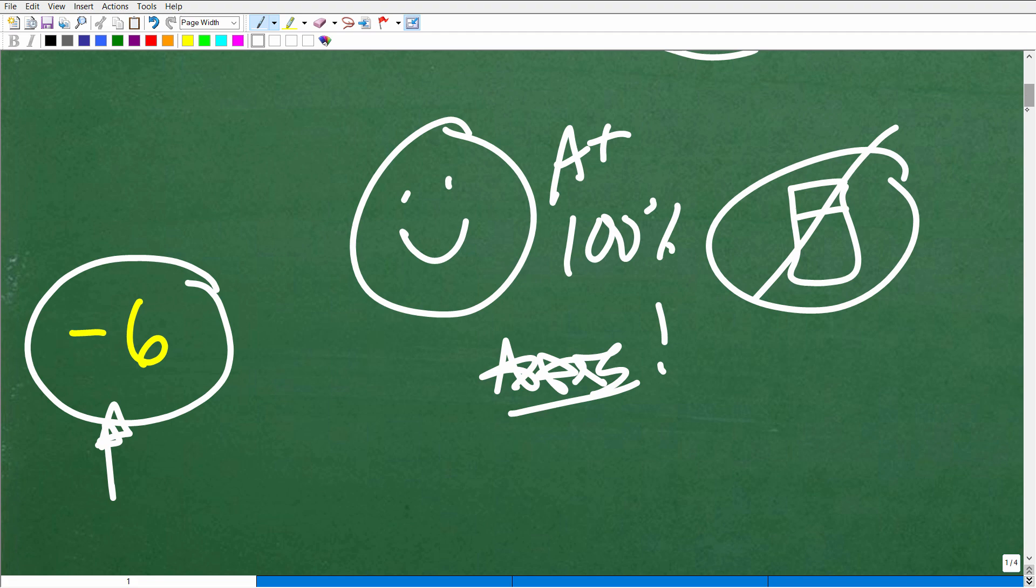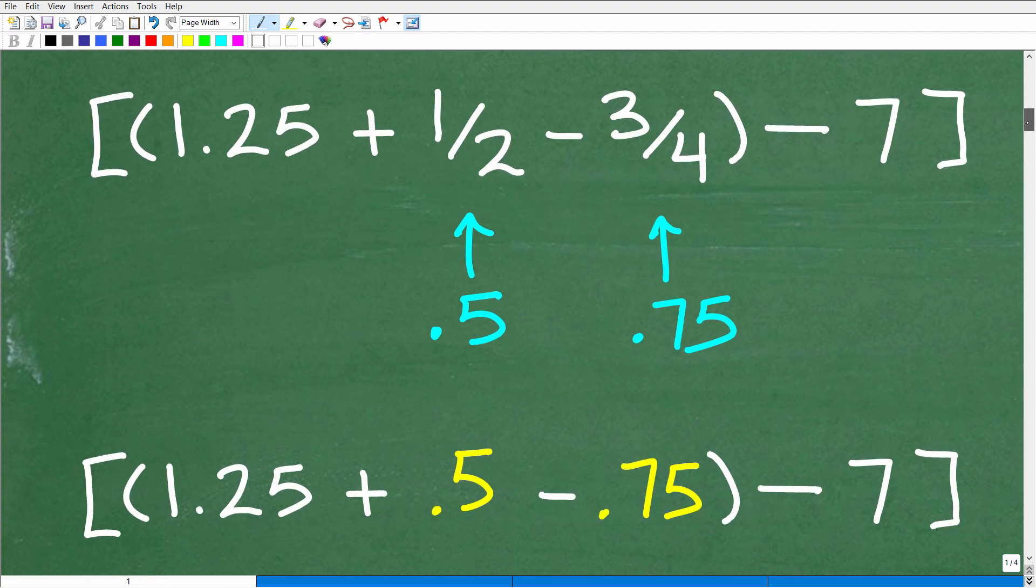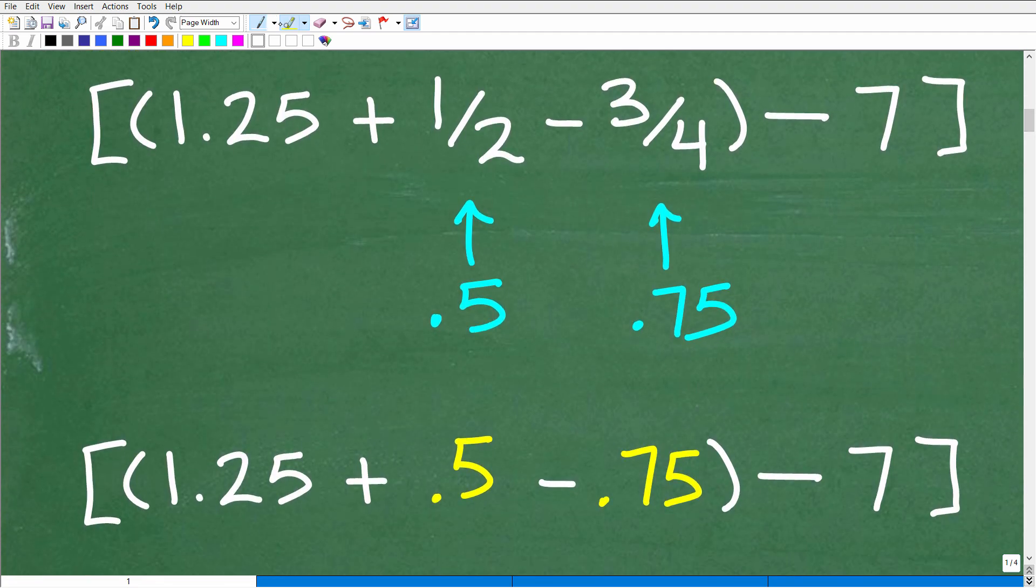All right, so let's get into this problem. Now, there are different ways you can approach this problem. So I'm going to approach this problem what I would think would be the easiest approach. But if you didn't do it this way and you got the right answer, that's perfectly fine as well. There's not just one way to do a math problem. Oftentimes there's different paths you can take. Of course, you'll want to think about finding the most efficient way to do a problem.